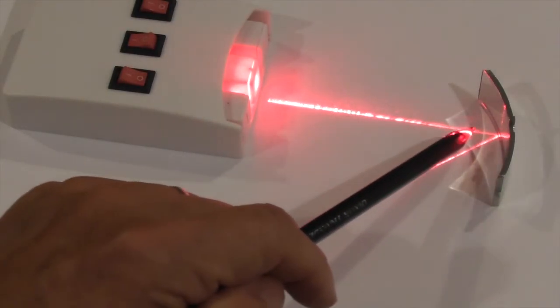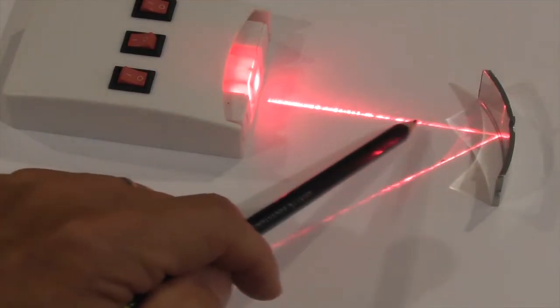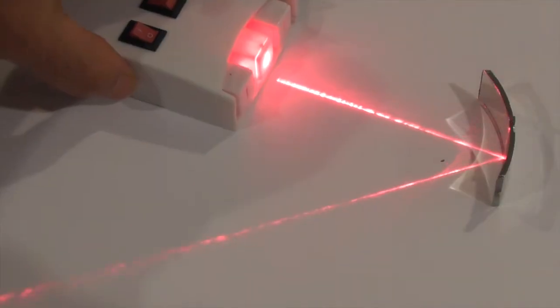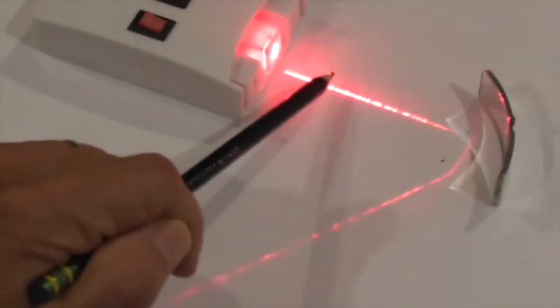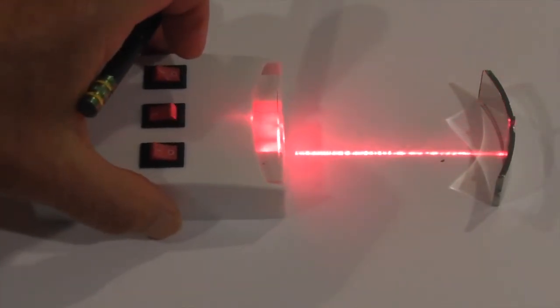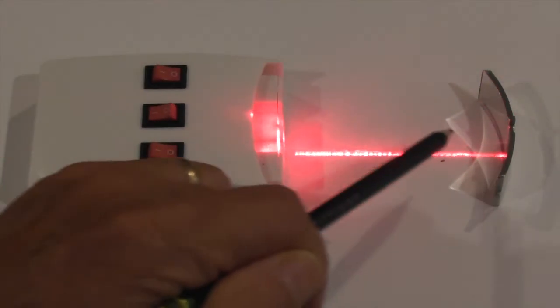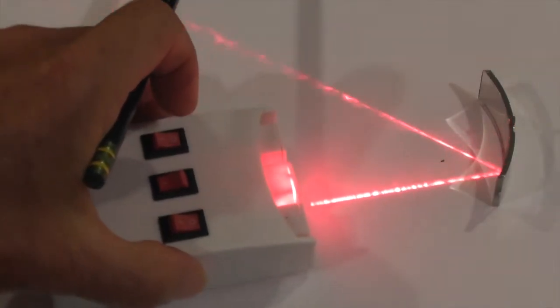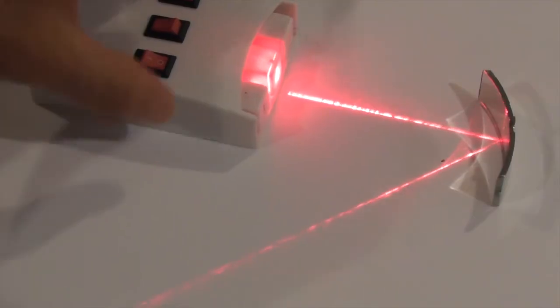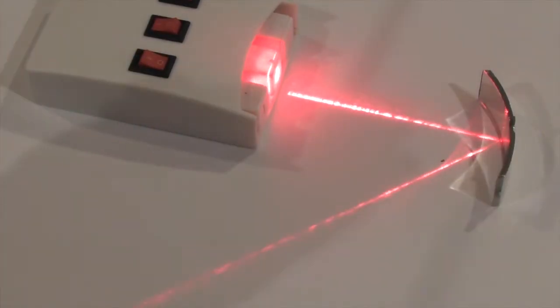No matter what angle you are at, the angle is always going to be equal. So you can see as I move it around, the Ray of Incident is always equal to the angle of reflection. And obviously if you put it directly on, it's going to reflect back. So let's move it around just a little bit. You can see and identify the Ray of Reflection, Ray of Incident, Incident Reflection.